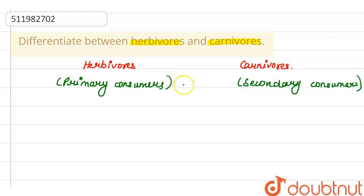So basically, the main difference between both of them is: herbivores are those organisms which eat plants, only plants basically, and plant products.